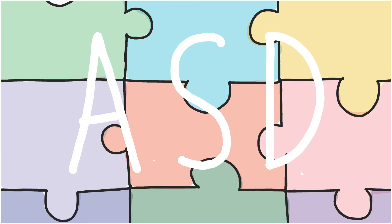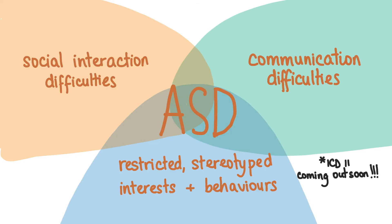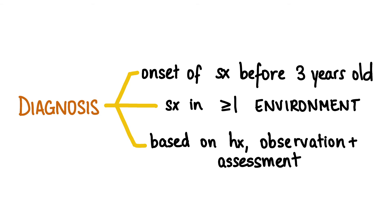1% of all children in the UK are on the autistic spectrum. Autistic spectrum disorder is characterized by a triad of symptoms. Social interaction difficulties, which can present as reduced social gestures, reduced eye contact, reduced interest in others and reduced awareness of social rules like personal space. Communication difficulties, which can present as delayed speech or repetition of words. And restricted stereotyped interests and behaviors like rocking, twisting, being upset by changes in routine, not liking to experiment with different foods, clothes or games, and obsessively pursuing interests. The symptoms must have started before the age of three and be present in more than one environment for a diagnosis to be made. The diagnosis is made based on a thorough history, clinical observation and assessment using standardized tools like ADOS to get a better idea of the patient's function, strengths and weaknesses.